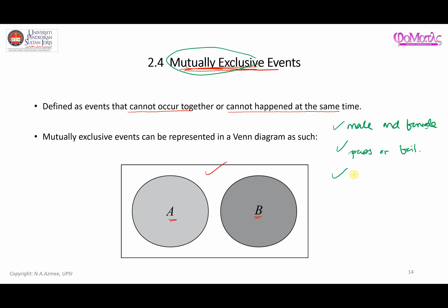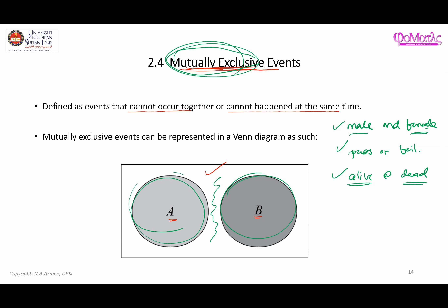Another example is alive or dead — you cannot be alive and dead at the same time; you are either alive or dead. Those are examples of mutually exclusive events where these events cannot happen together, so there will be no intersection and they will be clearly separated.